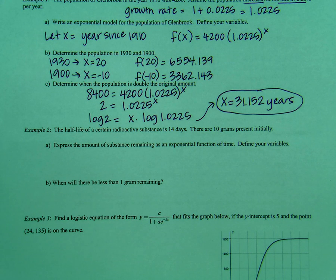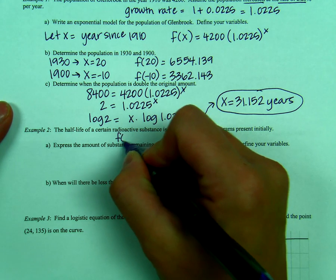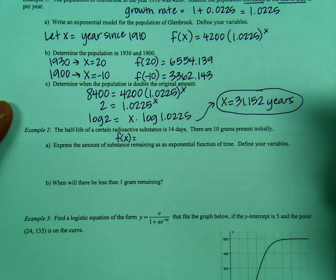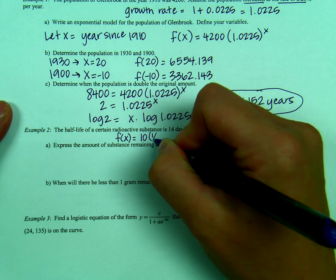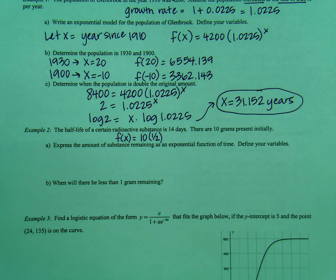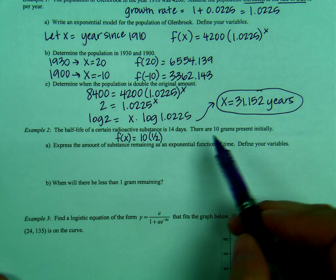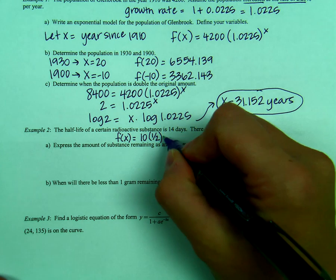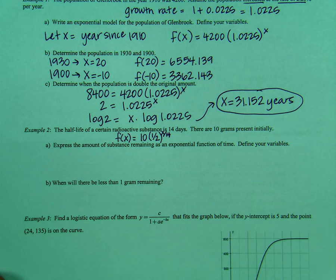It says the half-life of a certain radioactive substance is 14 days. There's 10 grams initially or present initially. So to write our equation here, we need to first of all realize that half-life, so our growth rate is going to be 1 half. So if we write this as a function, we know that f of x is going to equal our initial amount, which is 10, times 1 half. Now our exponent, this is a little different because it occurs every 14 days. So our exponent is going to be x over 14.